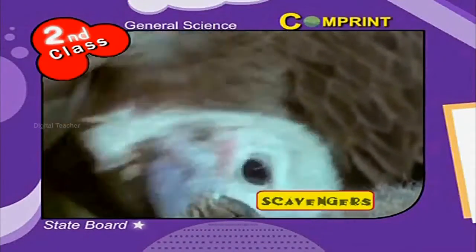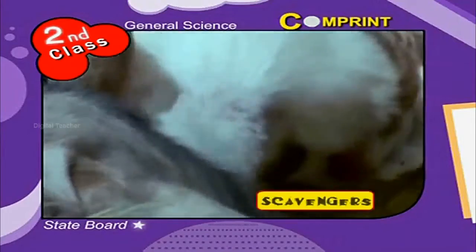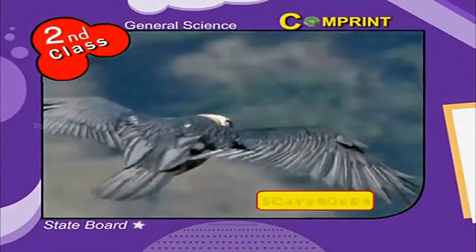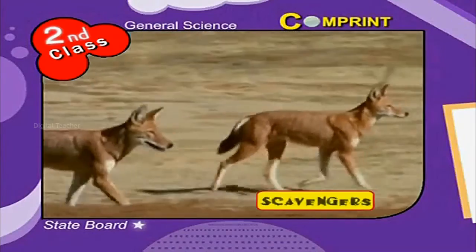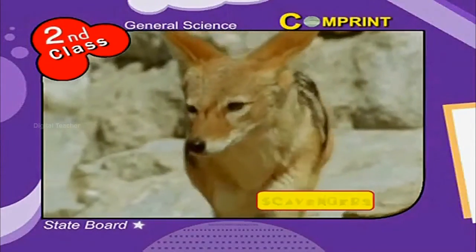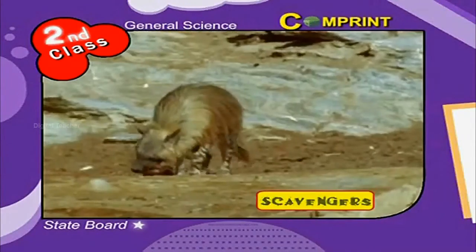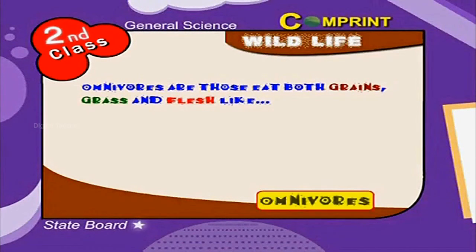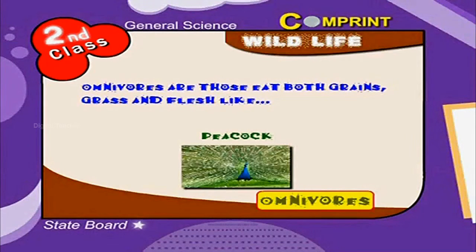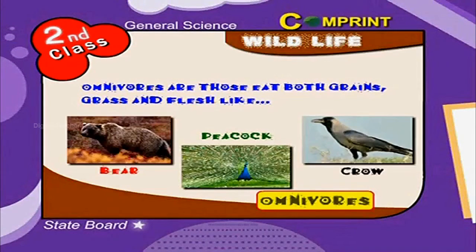Scavengers are animals that eat the remains of dead animals, like vulture, fox, jackal, and hyena. Omnivores are those that eat both grains, grass, and flesh, like peacock, bear, and crow.